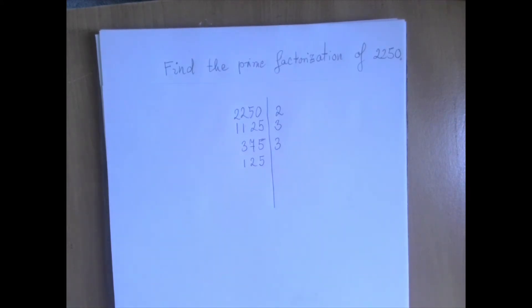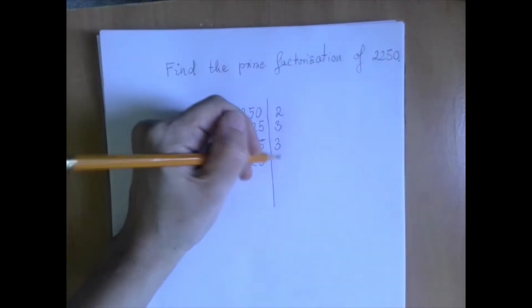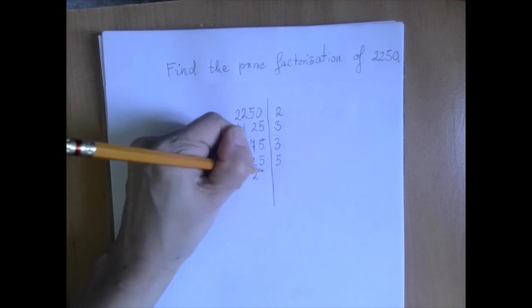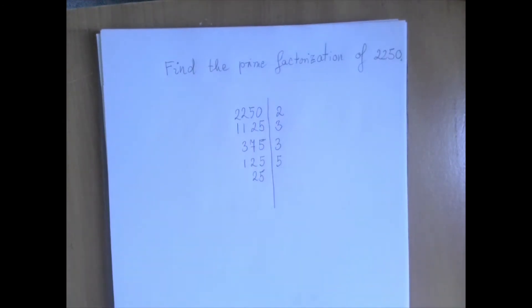Now let's roll up to the next prime number, 5. Is 125 divisible by 5? The answer is yes. So we write it down, and we divide by 5. 125 divided by 5 is 25. And we kind of know where we're going. 25 is 5 squared.